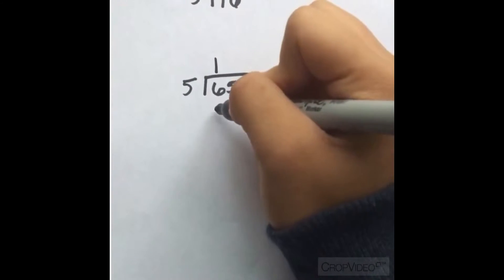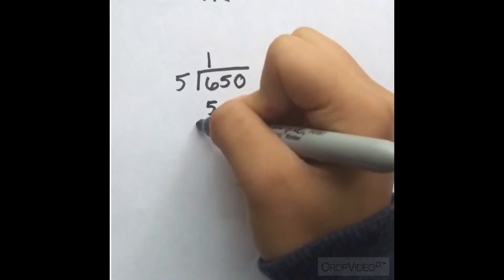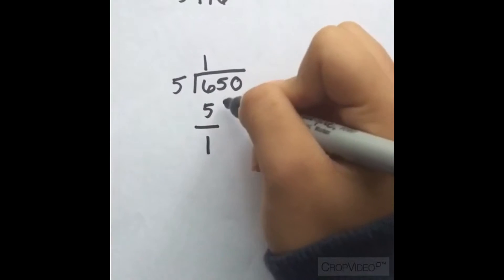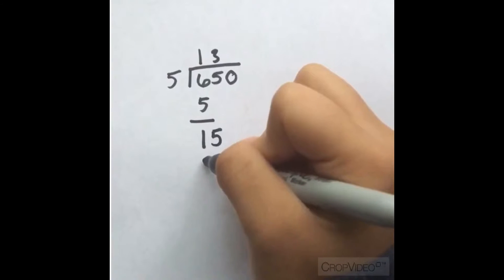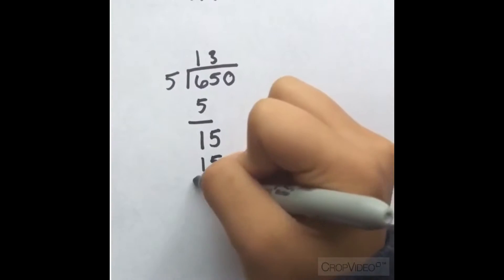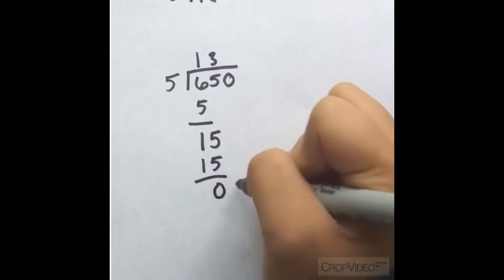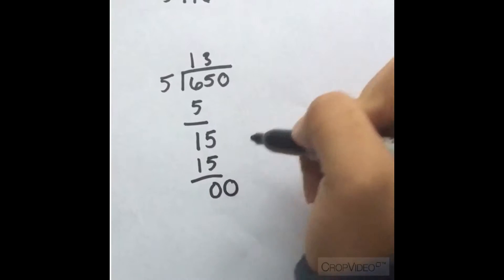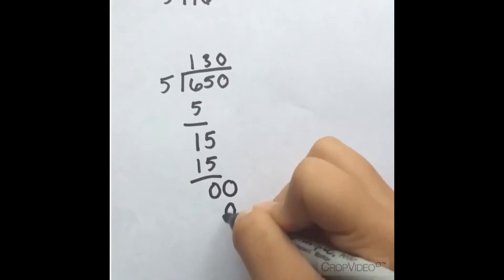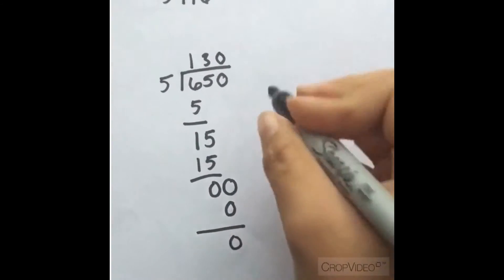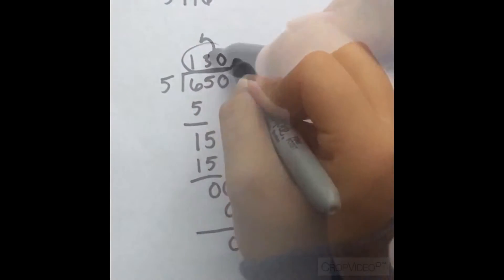Algorithms are step-by-step procedures that guarantee a solution. Long division is just one example of an algorithm. So when dividing 650 by 5, you take it in steps. 5 goes into 6 one time, minus that is 1. Bring down the other 5. That's 15. 5 goes into 15 three times. And you get the point. It takes a couple steps to get to the answer of 130.